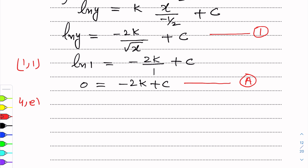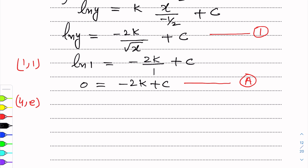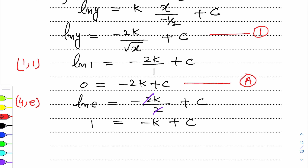Now for the second point (4, e): substituting into the curve equation gives log e = −2k / root 4 + c. Since root 4 = 2, this simplifies to log e = −2k/2 + c = −k + c. And since log e = 1, we get 1 = −k + c. Let this be equation b.